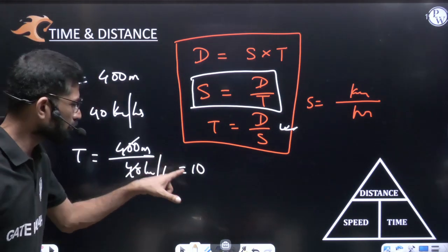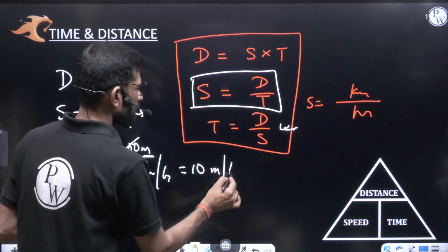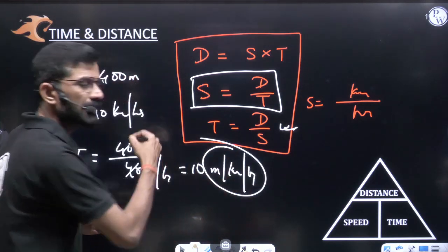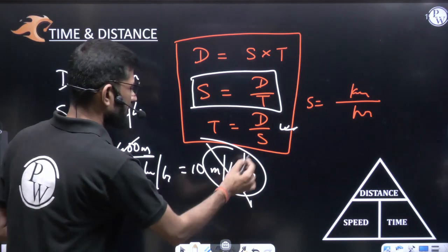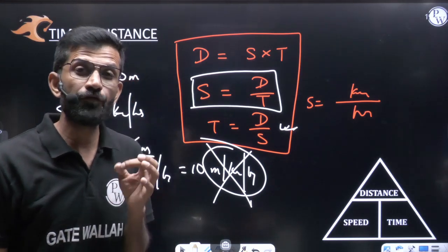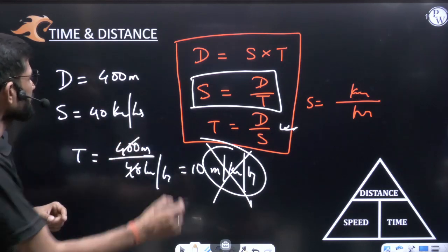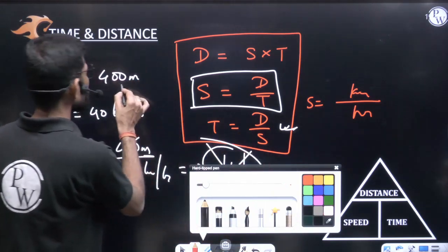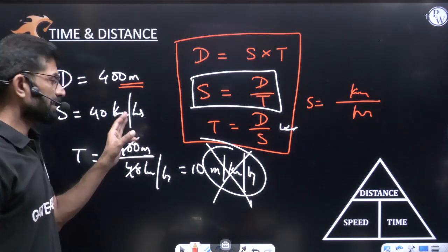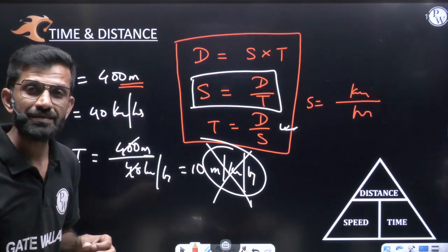Before using any formula, you must make the units similar. Either convert 400 meters into kilometers, so that kilometer cancels and the answer comes in hours — or convert the speed from km/hr into m/s by multiplying by 5/18, so that meter cancels and the answer comes in seconds.